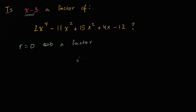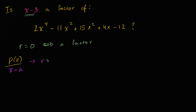And we know a very fast way of calculating the remainder when you take some polynomial and divide it by a first-degree polynomial like this. The polynomial remainder theorem tells us that if we take some polynomial p(x) and divide it by (x minus a), then the remainder is just going to be equal to our polynomial evaluated at a.